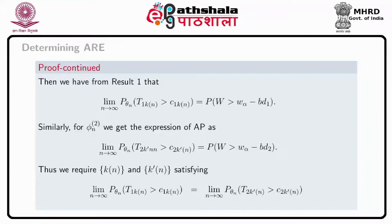We require k_n and k'_n to satisfy that the limits of the two powers are equal. After some simplification, the limit as n tends to infinity of k'_n divided by k_n equals the required result as given in the statement of result 2, completing the proof.